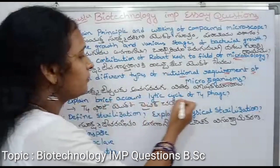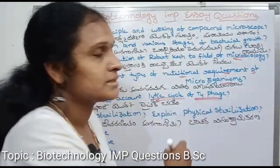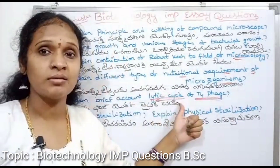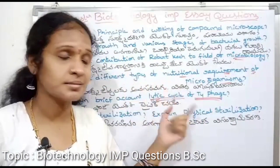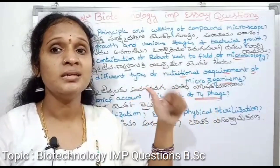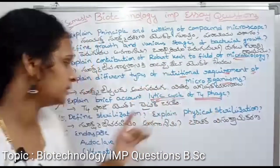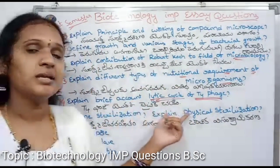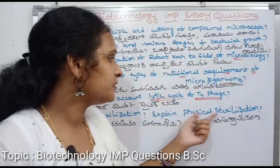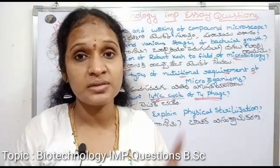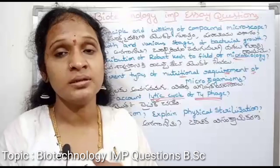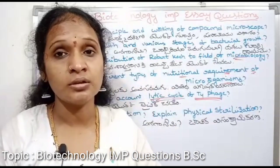Explain a brief account of the life cycle of T4 phage. In T4 phage, you can use the lytic cycle or lysogenic cycle. You can use the lytic cycle along with its structure or diagram. Define sterilization: it means to avoid contamination. There are types of sterilization.